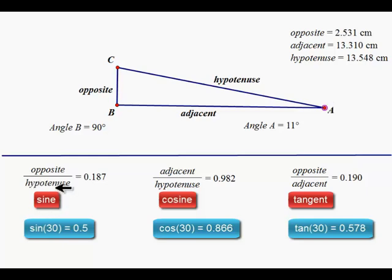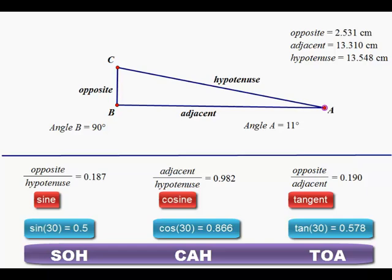One way of remembering these ratios is SOH CAH TOA. This helps you remember that sine is opposite over hypotenuse, cosine is adjacent over hypotenuse, and tangent is opposite over adjacent.